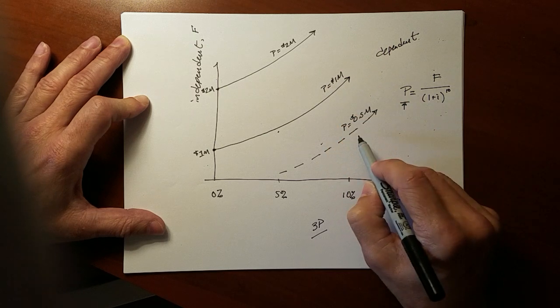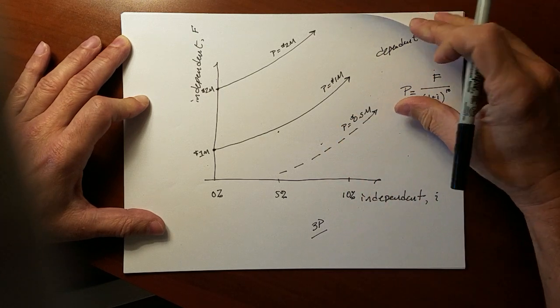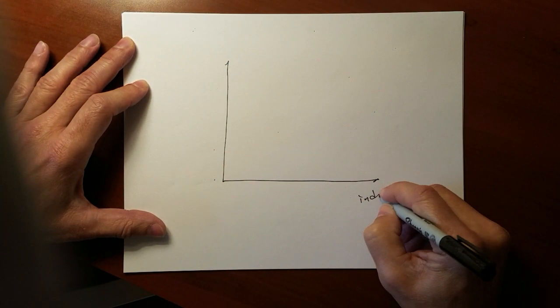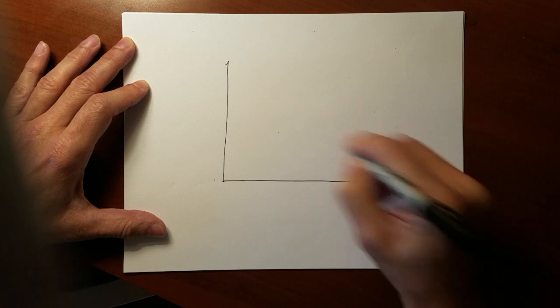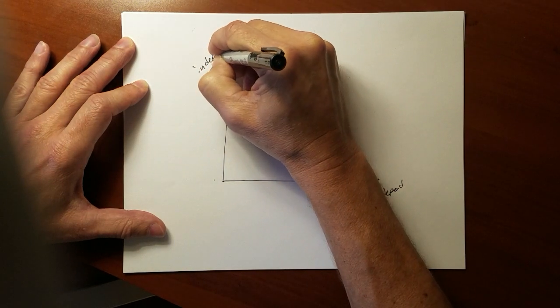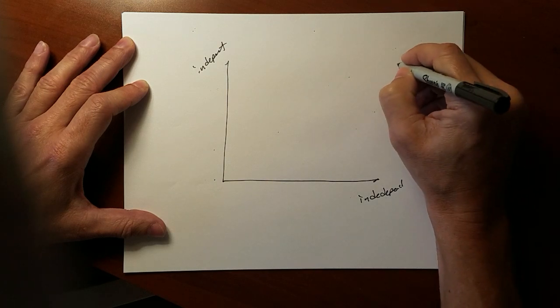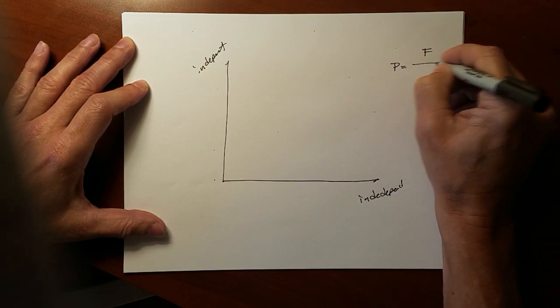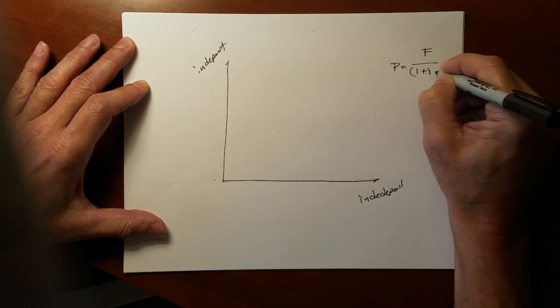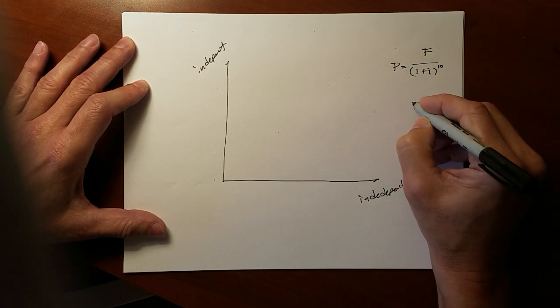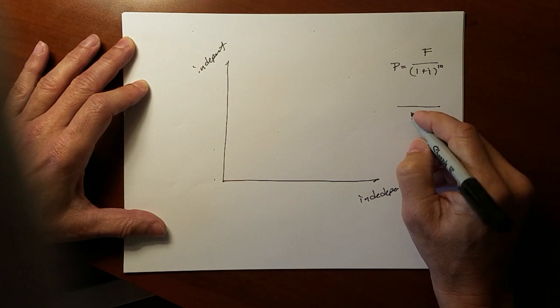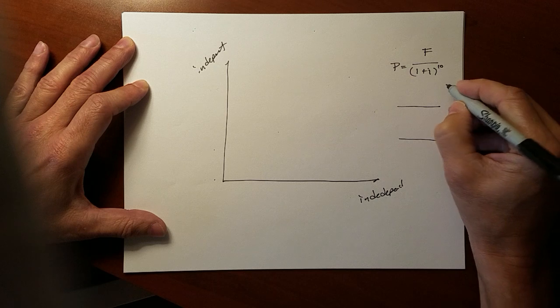There is a third type of sensitivity analysis and this would be a decision map. Suppose we have an independent variable and another independent variable. In this case, P, the present value, equals F over 1 plus I, still exploring the same equation. But we might have two different cash flow diagrams. The decision map for sensitivity analysis is for comparing two different alternatives.